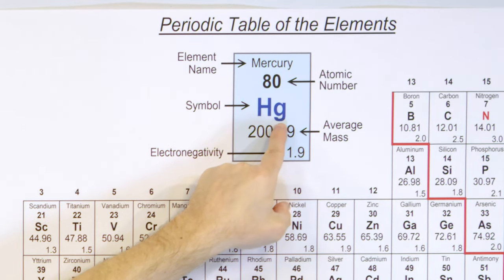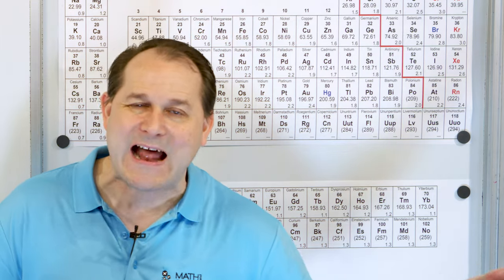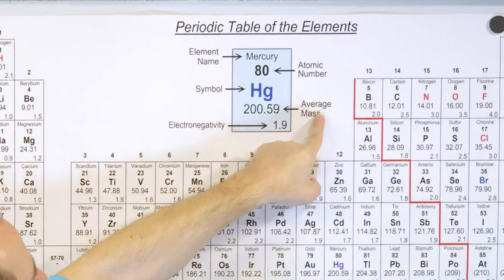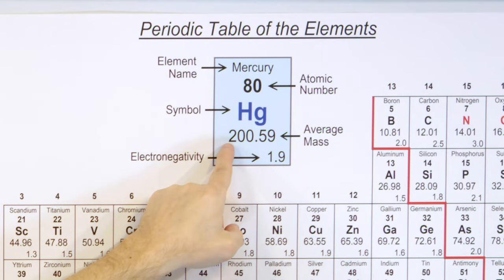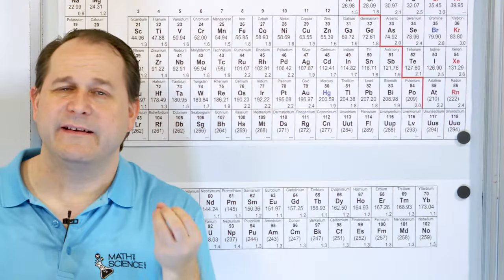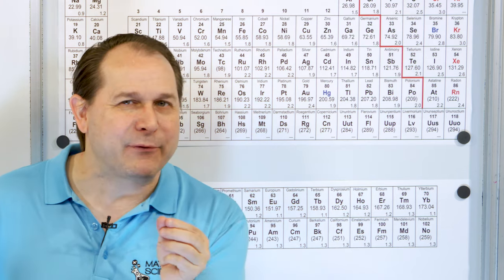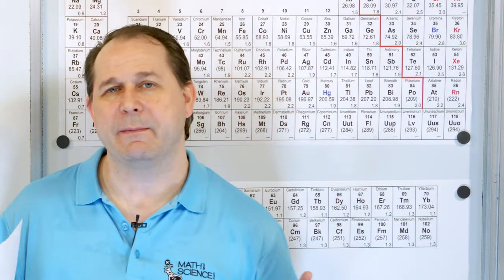Then we have the symbol Hg. Notice Hg doesn't look anything like the word Mercury — that's because many symbols come from the Latin words originally used. So Hg is from the Latin word for Mercury. Some don't quite match, but most do. We also have the average mass listed — in your table it might say atomic mass or atomic weight. This number is the average mass of a sample of these atoms. It's an average because in nature there are slightly different flavors of atoms called isotopes, so you need a weighted average of all the different flavors to pick one number for the mass.